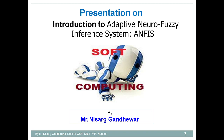In the ANFIS architecture, we are trying to combine the benefits of fuzzy logic with the benefits of a neural network, so that we get a new and more beneficial concept. That new concept is nothing but the Adaptive Neuro-Fuzzy Inference System.